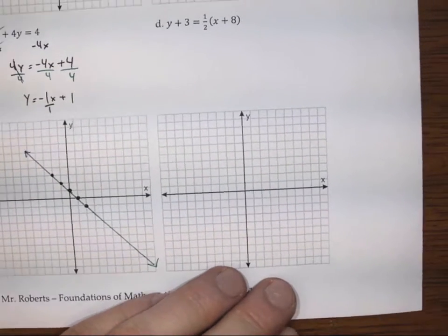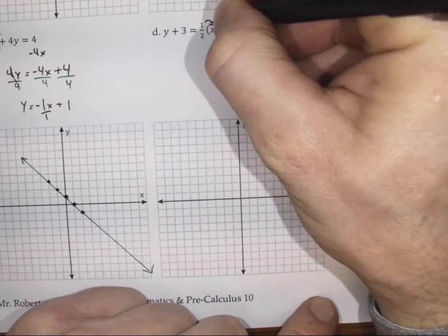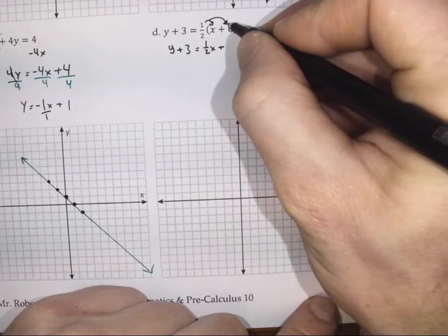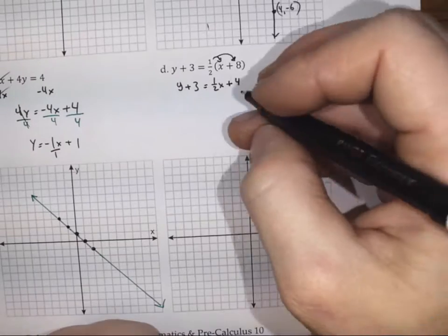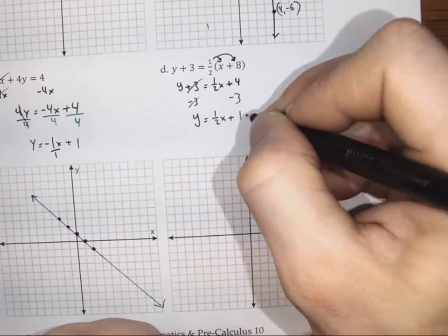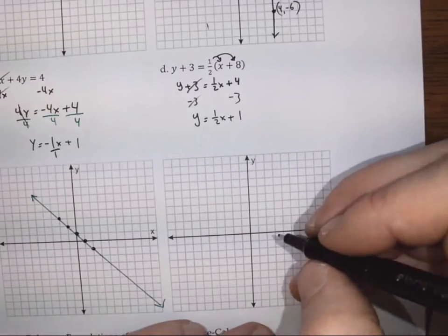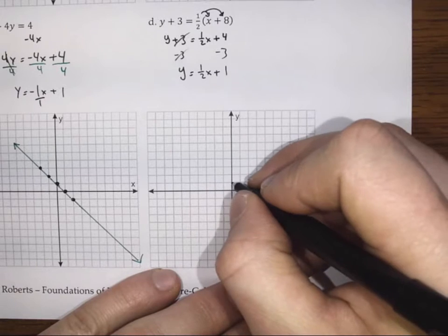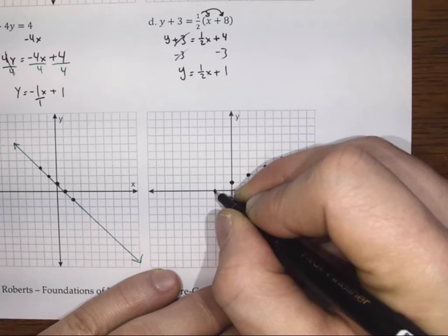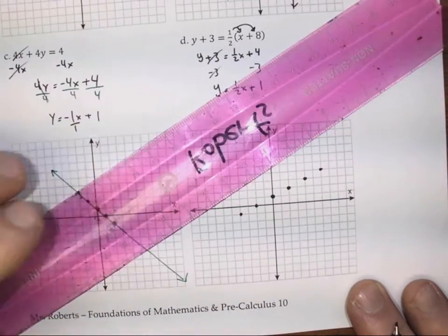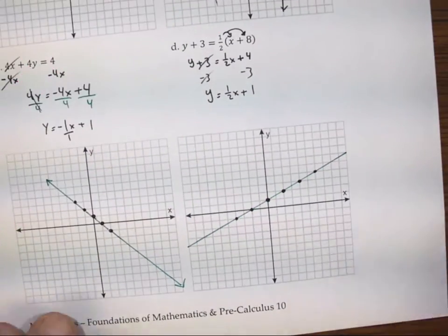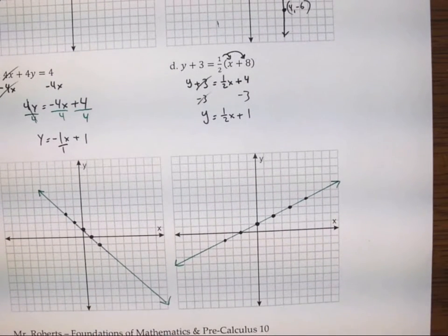Lastly, we've got to graph this one. The first thing to do is distribute the 1/2 into the brackets: y + 3 = 1/2 x plus 1/2 times 8, which is 4. Then we subtract 3 from both sides to isolate y fully, giving y = 1/2 x plus 1 — since 4 minus 3 is 1. To graph this, put a y-intercept of 1 on the graph, then rise 1 and run 2 repeatedly. Let me know if you have any questions about this, or just come see me during Flex.